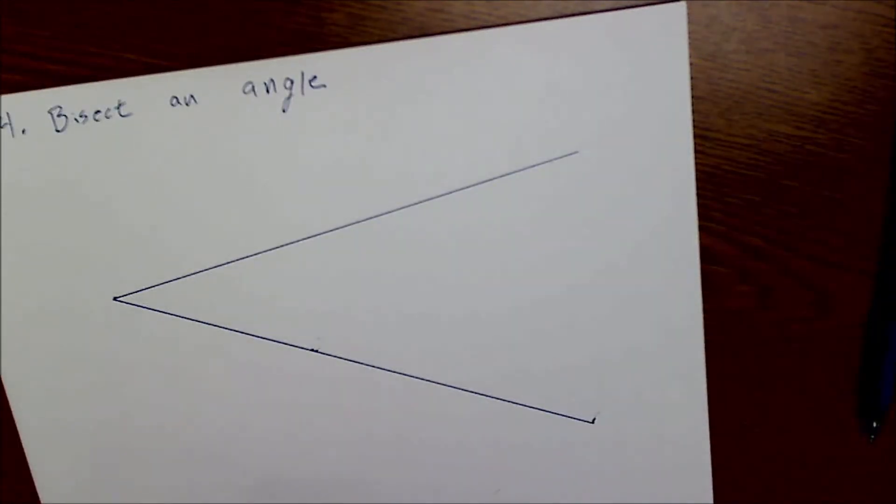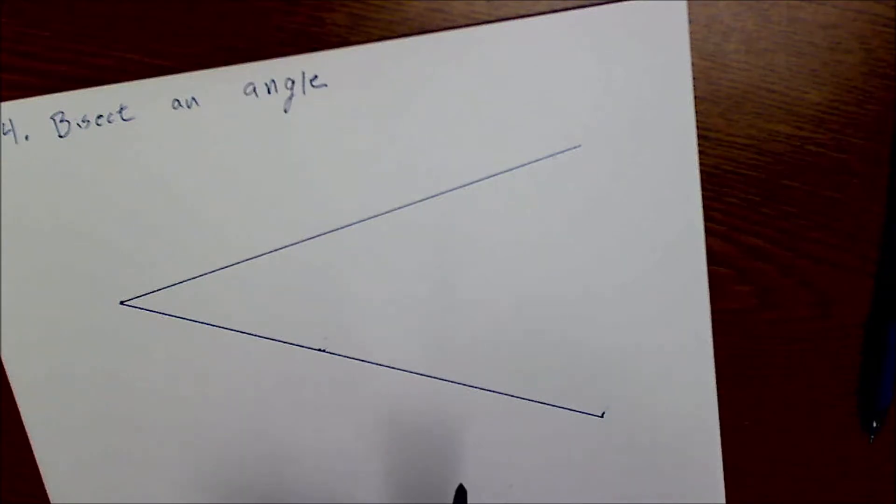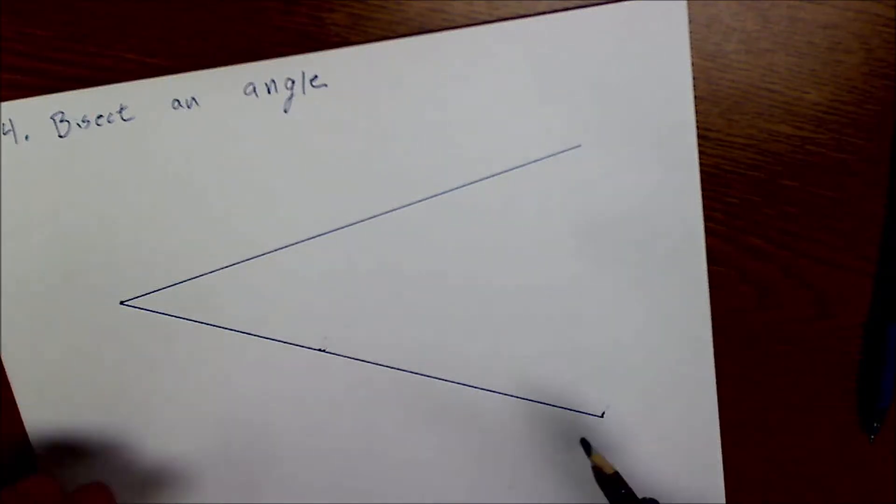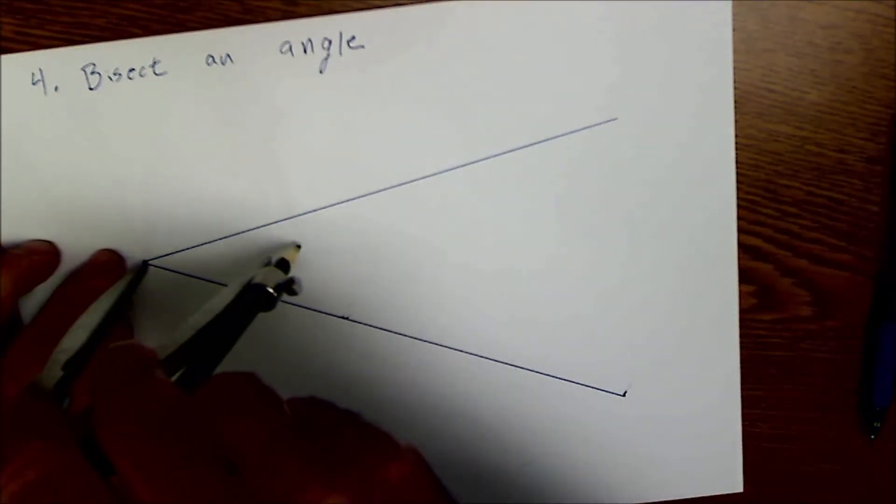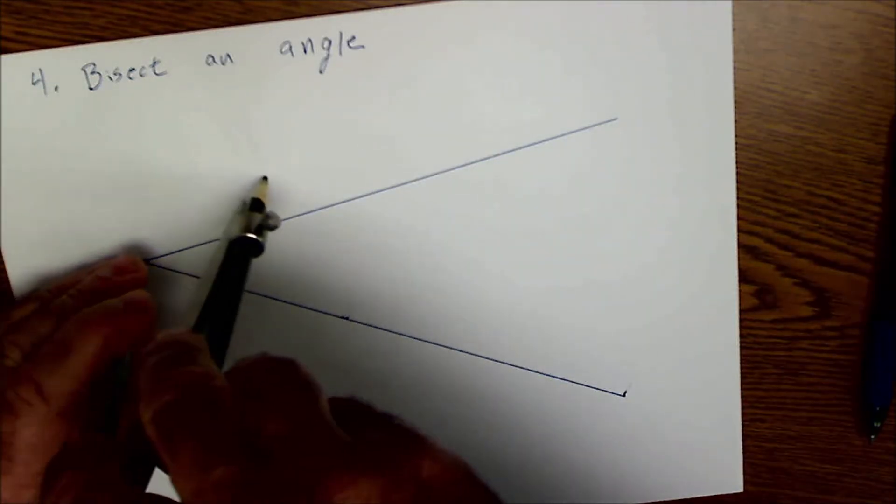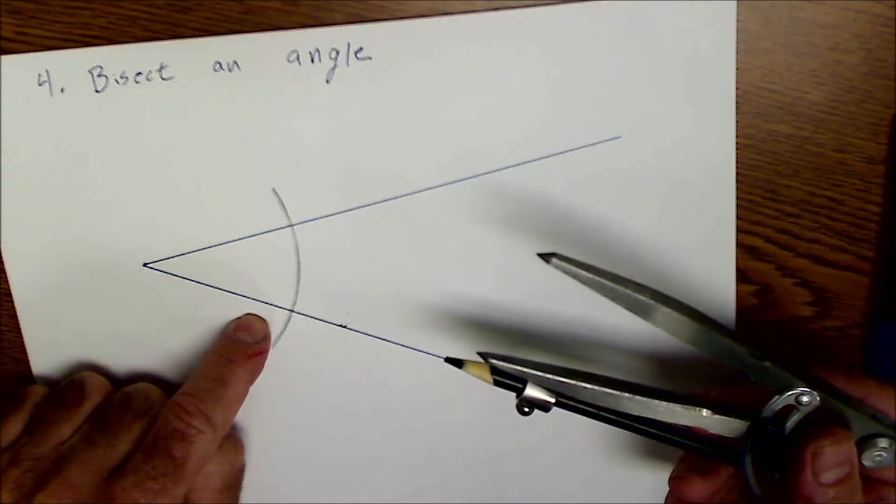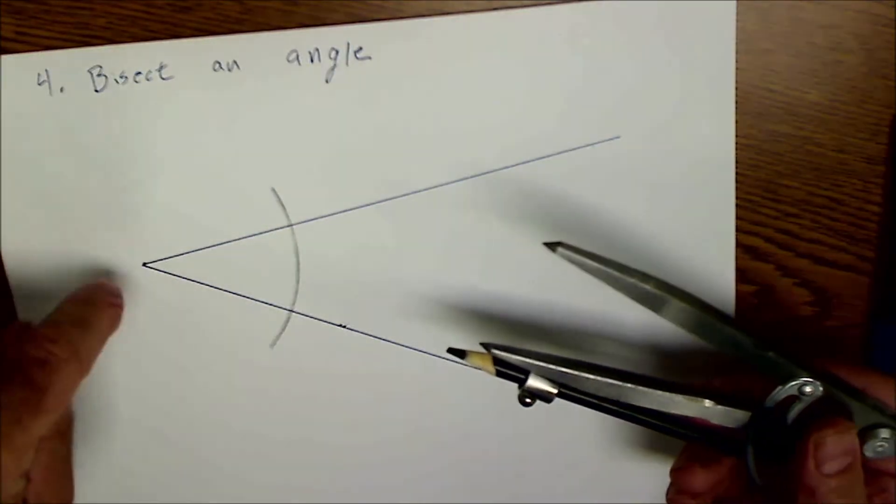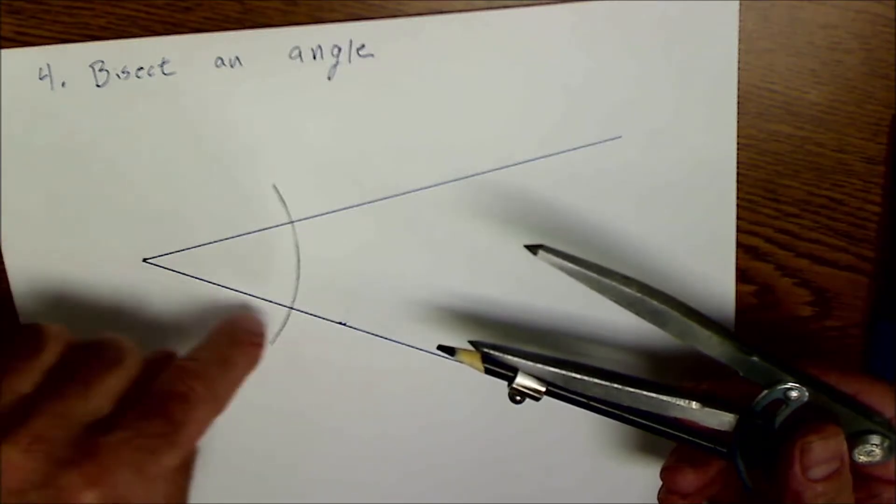All right, on to number four, bisect an angle. This is the one I did out in the shop on the board to show you that you could use this for laying out parts in any sort of shop. But here, let me do it again on a piece of paper with my compass. I set it at my vertex. I draw my arc across both sides of the angle because that's going to be all points equidistant from there, meaning that point is equidistant from there as that point is.